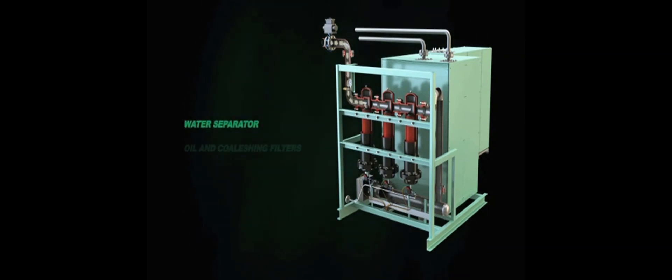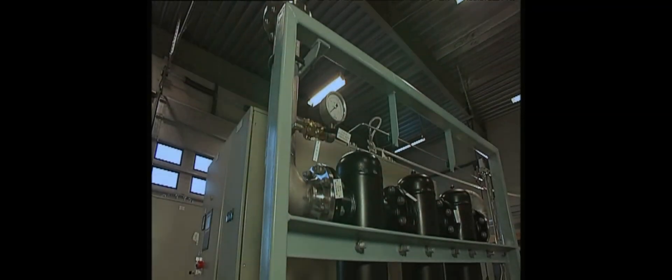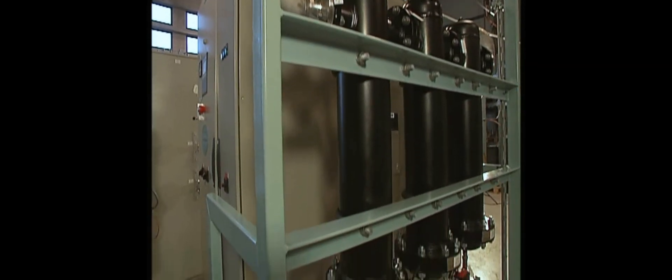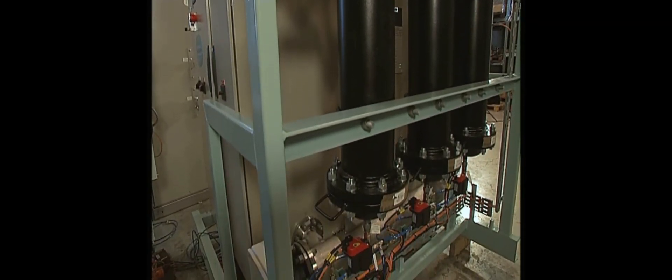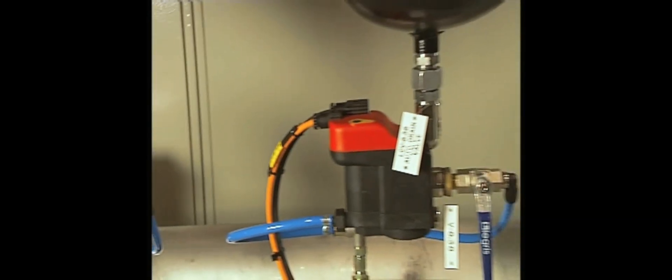The feed air passes through a filter package, which is installed upstream of the membranes in order to remove water, particles, and residues of compressor oil. The filter package is designed to clean the provided feed air to the specified requirements. The filters are drained by automatically operated drain valves.